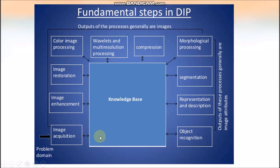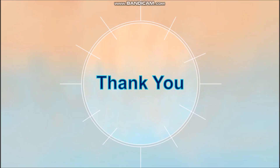Then comes the knowledge base, which is the biggest block in the fundamental steps. This is the knowledge about a problem domain, coded into an image processing system. For example, for representation and description, the representation and description methods are stored in the knowledge base. Certain knowledge or algorithms are required to implement specific methods, and that is represented in the knowledge base. That covers all the fundamental steps in digital image processing — thank you for listening.